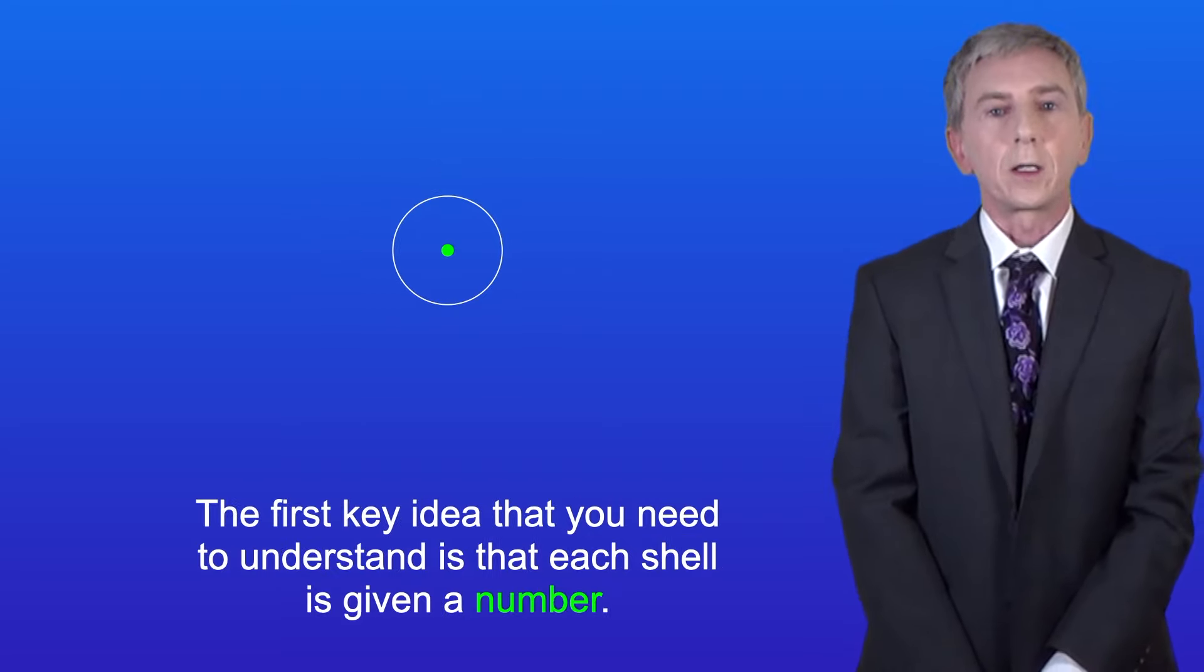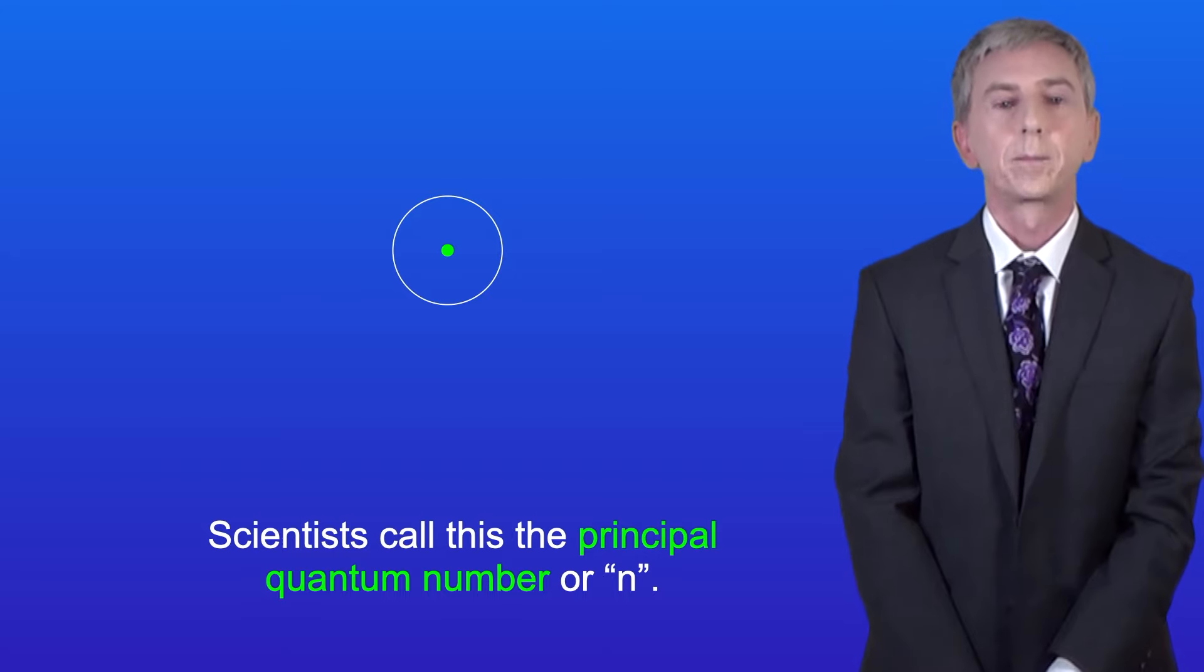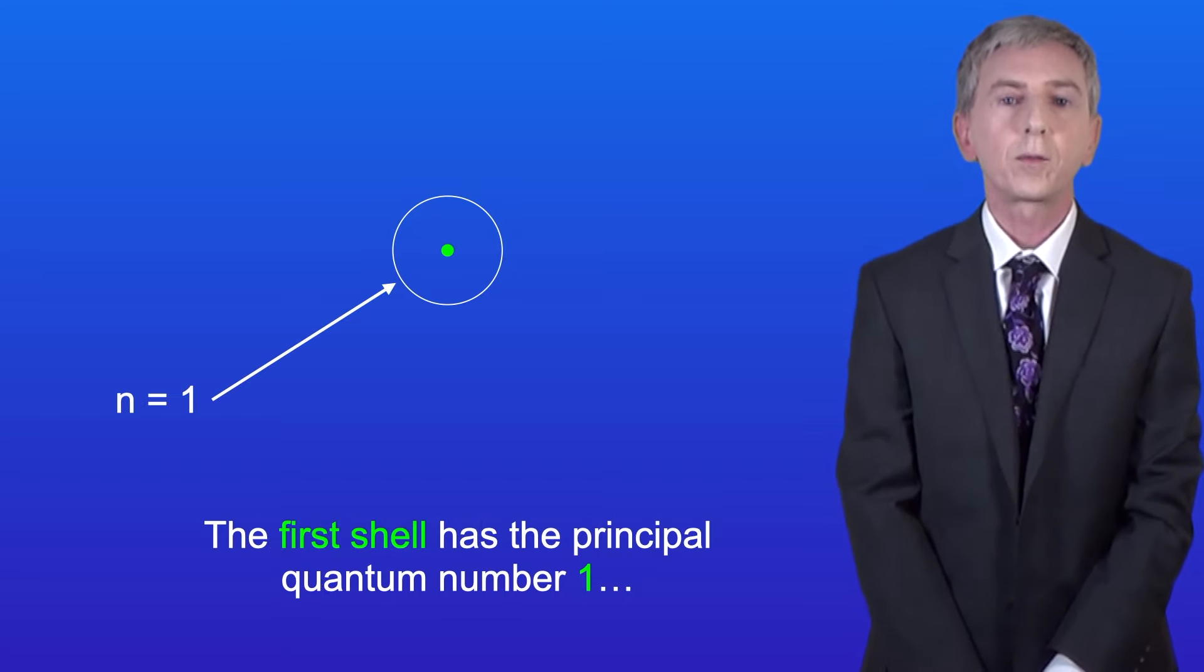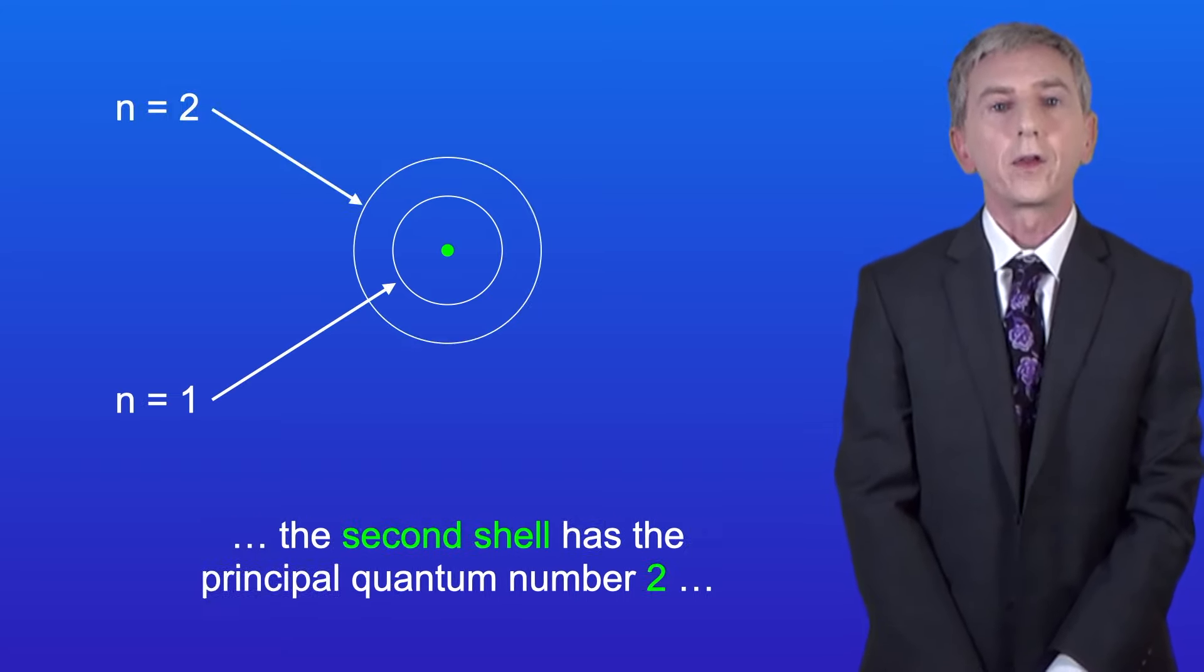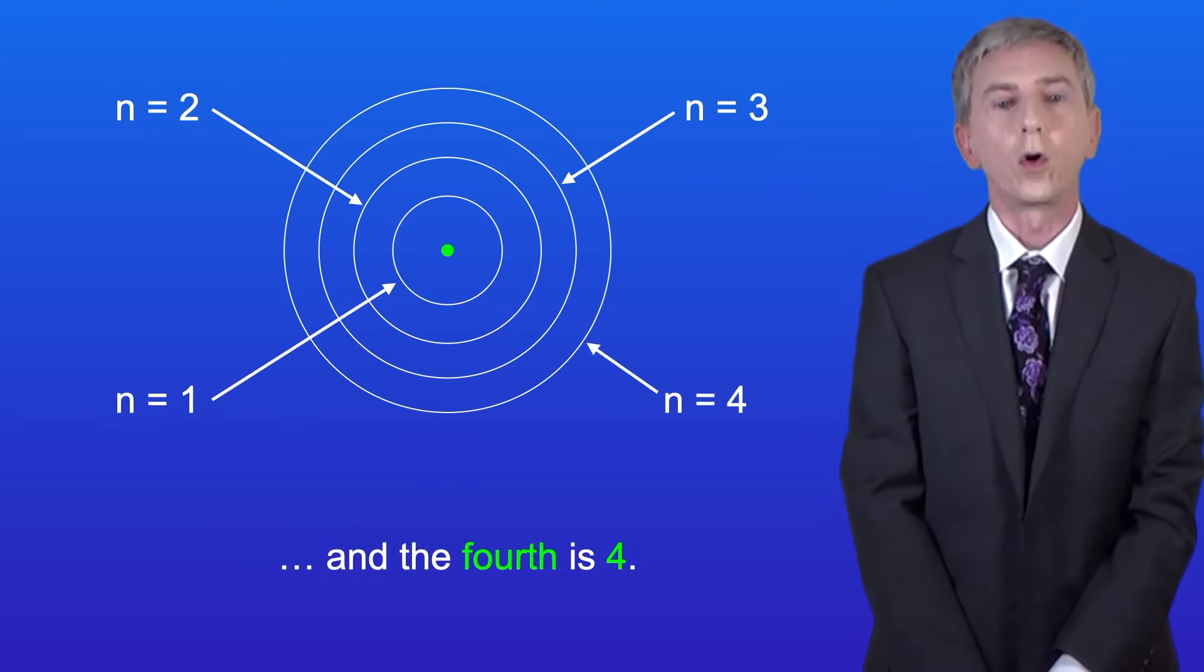The first key idea you need to understand is that each shell is given a number. Scientists call this the principal quantum number or n. So the first shell has a principal quantum number one, the second shell has a principal quantum number two, the third is three, and the fourth is four.